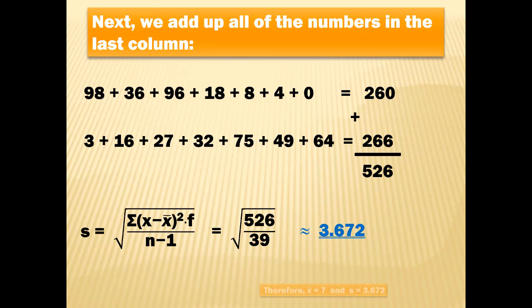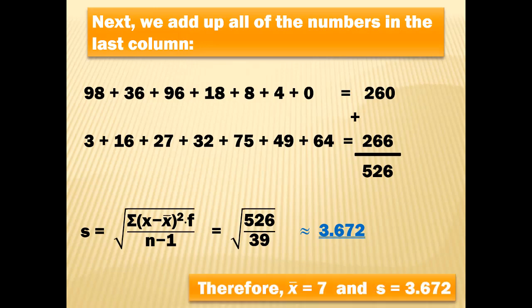So the average number of eggs per household was 7 with a standard deviation of 3.672 — meaning a randomly chosen data value is expected to vary from the mean by about 3.672 eggs. That brings us to the end of Section 2.4. Please look on Pearson for your homework, and have a great day.